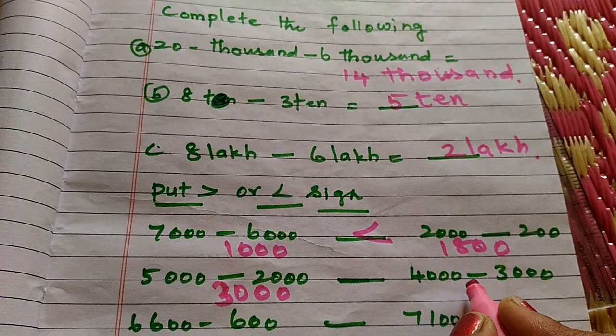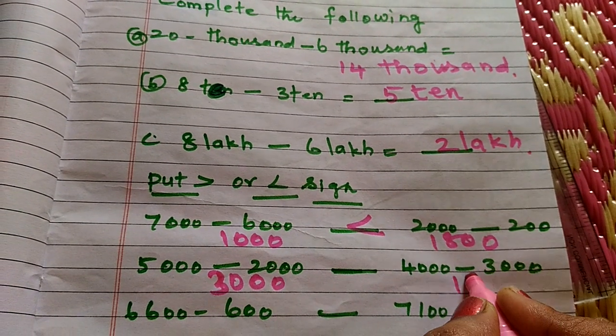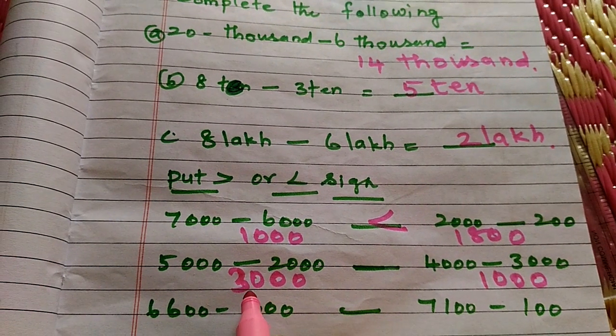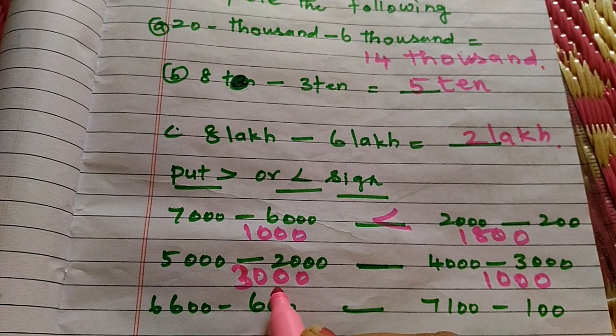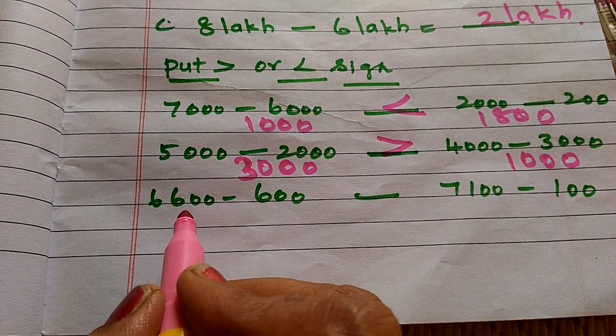5,000 minus 2,000 equals 3,000. Then 4,000 minus 3,000 equals 1,000. Which one is the bigger number, 3,000 or 1,000? 3,000 is the bigger number, so greater than.